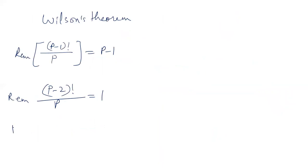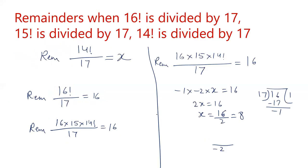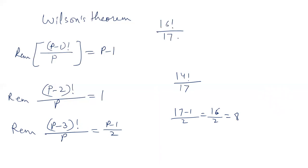Let's generalize this formula: if the value is (p−3) factorial divided by p, then the remainder will be (p−1)/2. In case of 14 factorial divided by 17, the remainder is (17−1)/2 = 16/2 = 8. So summarizing: 16 factorial divided by 17 gives remainder 16; 15 factorial divided by 17 gives remainder 1; and 14 factorial divided by 17 gives remainder (17−1)/2 = 8. I hope you liked this video. Please like our videos and subscribe to our channel.